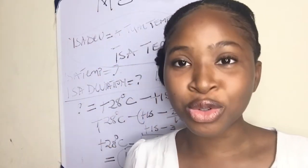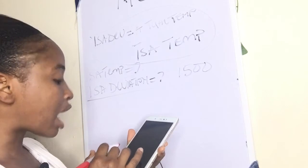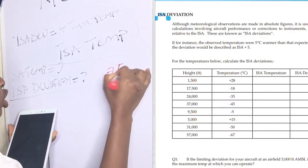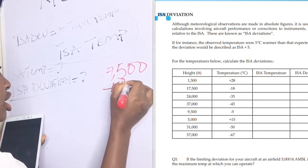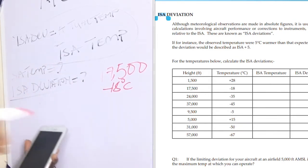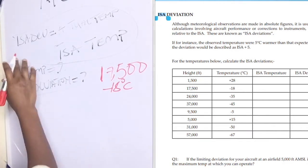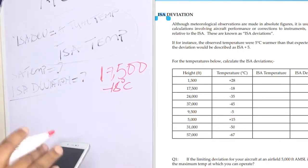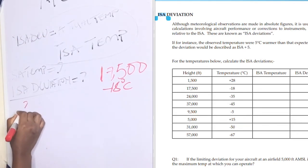Now moving to question two. The height given is 17,500 feet and the temperature is minus 18 degrees Celsius. This looks a little different because we now have a negative temperature. Follow closely — if you didn't fully understand question one, you will definitely understand this one. We are still using the same formula: ISA deviation = actual temperature − ISA temperature.